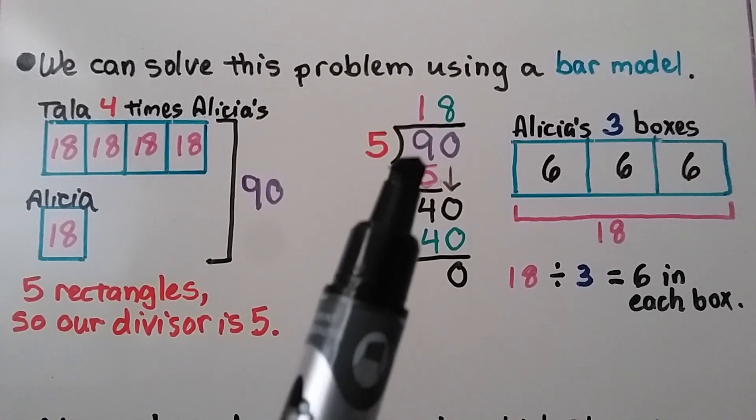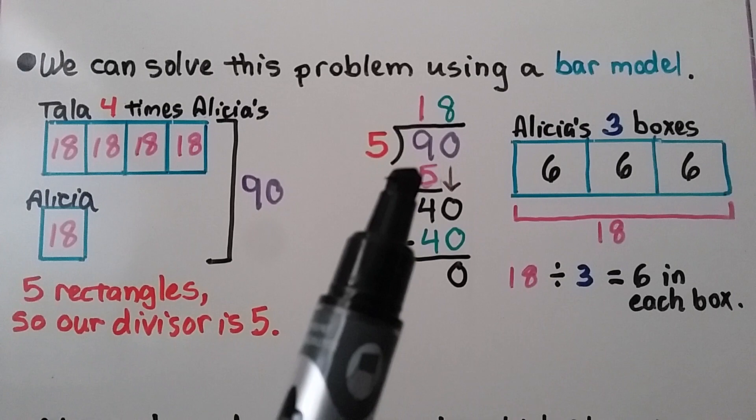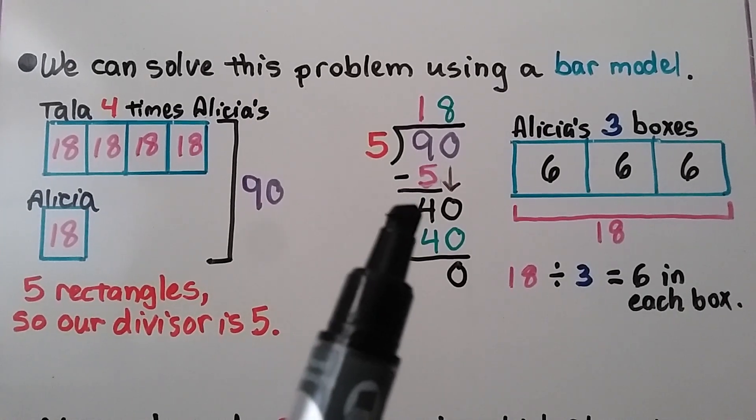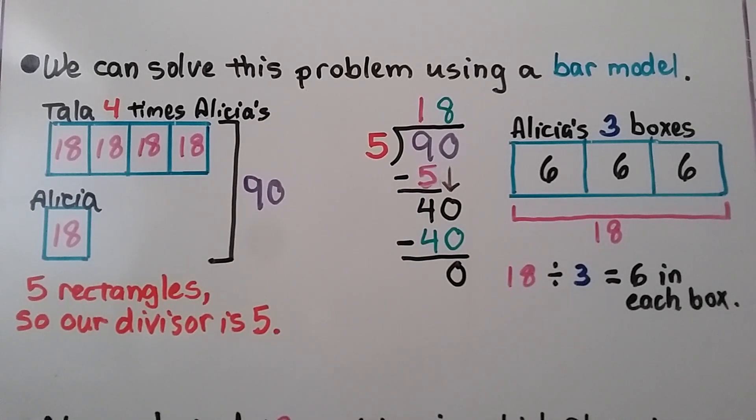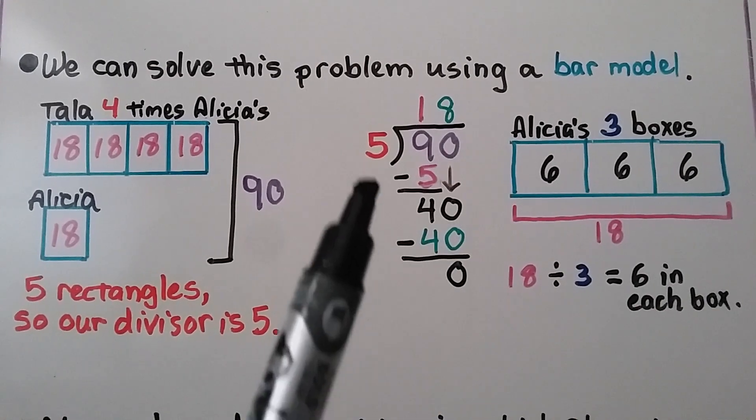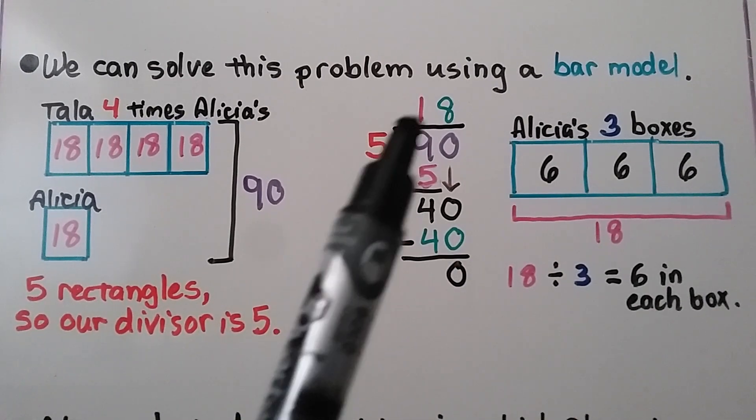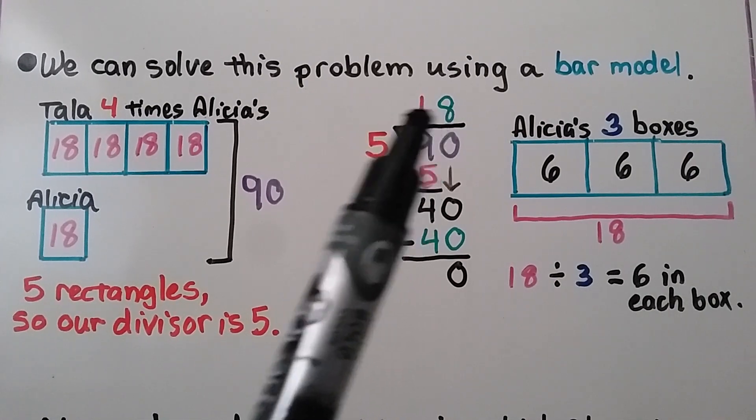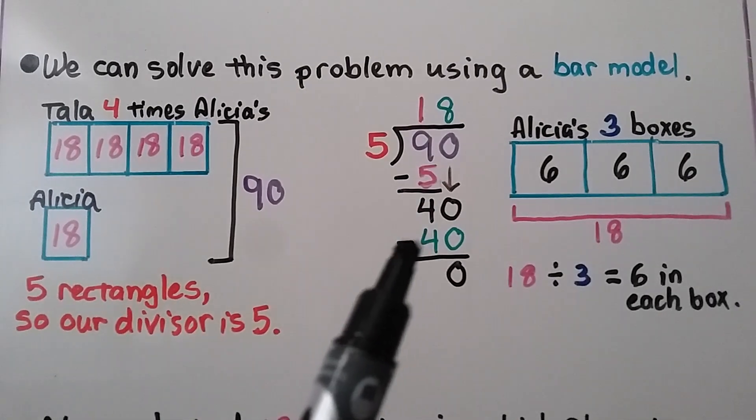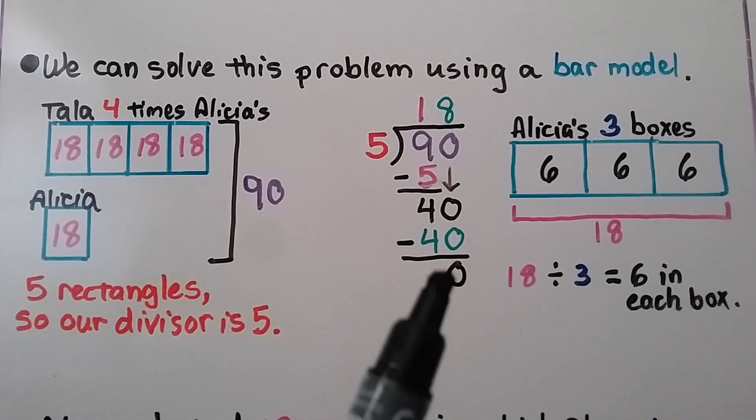5 can fit into 9 one time. We put a 1 above the 9. And 5 times 1 is 5, and we subtract that 5. We get 4. Now it's the 0's turn to come down. And we ask ourselves how many times 5 can fit into 40. 5 times 8 is 40. We put an 8 in our quotient. And 5 times 8 is 40, so that's what we subtract. We get a 0.